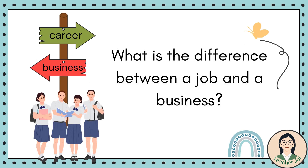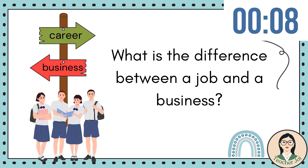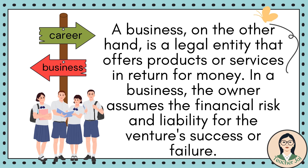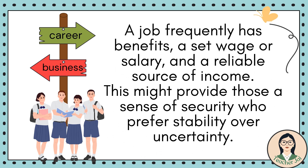What is the difference between a job and a business in the context of ICT? A job is an employment arrangement in which a person works for another person or business. In exchange for their time and work, the employee receives a pay or wage. A business, on the other hand, is a legal entity that offers products or services in return for money. In a business, the owner assumes the financial risk and liability for the venture's success or failure. A job frequently has benefits, a set wage or salary, and a reliable source of income, which might provide a sense of security for those who prefer stability over uncertainty.